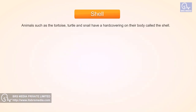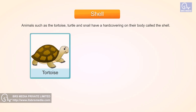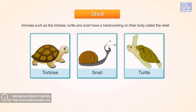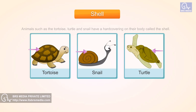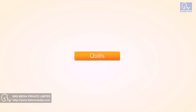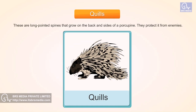Shell. Animals such as the tortoise, turtle, and snail have a hard covering on their body called the shell. When an enemy comes near, they hide themselves under the shell. Quills. These are long pointed spines that grow on the back and sides of a porcupine, and they protect it from enemies.